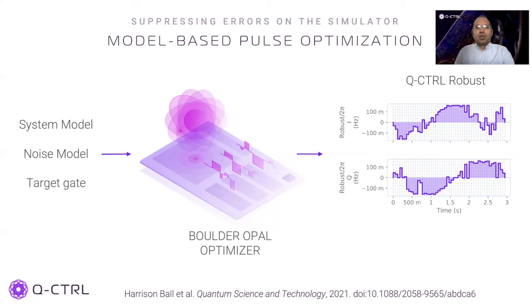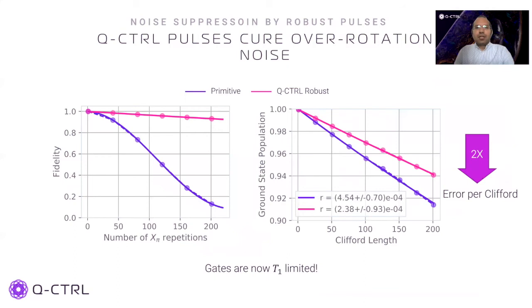Here, we use the Q-Control optimizer to generate pulses that suppress the over-rotation noise. For more information about the optimizer, please refer to the work done by Ball et al. Gates implemented using the robust pulses are completely immune to coherent over-rotation noise. The robust pulse completely cures the oscillation seen after repeated application of X180 pulses, and the error per Clifford goes down by 2x in randomized benchmarking experiments. This is again in line with results seen on an IBM superconducting device. The gates are now T1 limited.